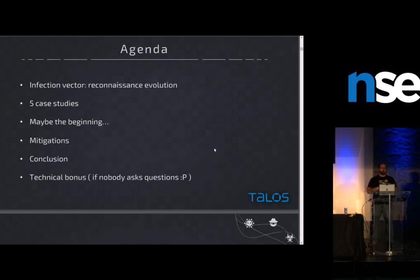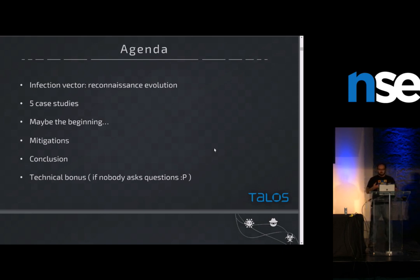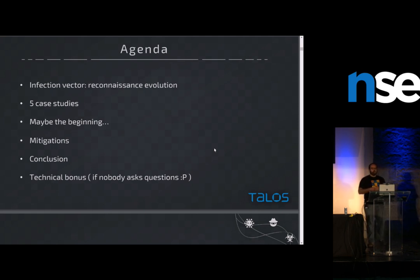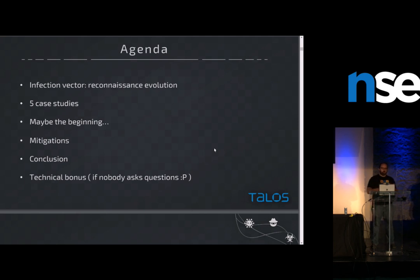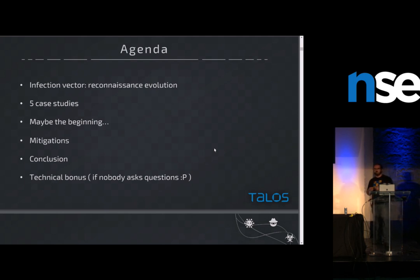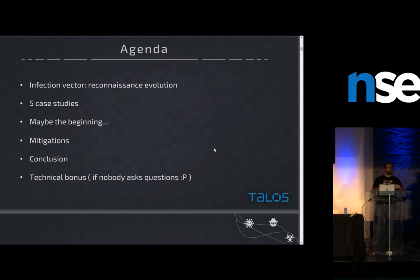Today I'm going to speak about a new kind of issue we have during investigation. It's a new trend for APT actors to add some feature inside the infection vector in order to never deliver the exploit or the final remote administration tool if they are not sure 100% that the targeted person is the right one. I will show you with five case studies exactly how the guys modified the infection vector to limit the spread of the exploit or the remote administration tool.